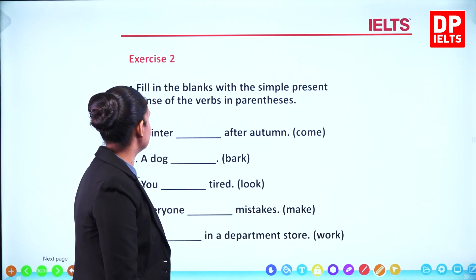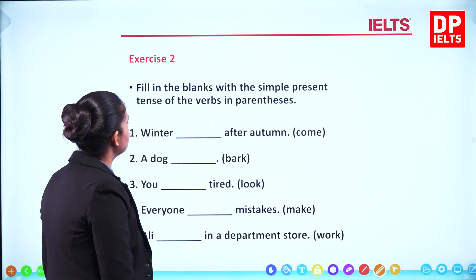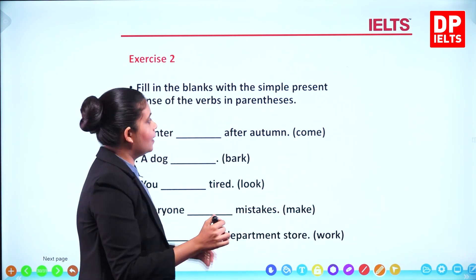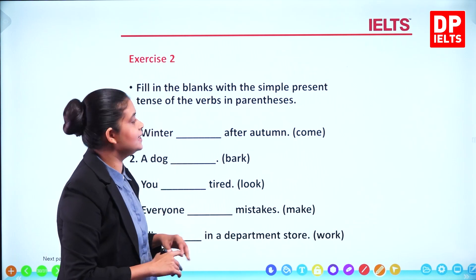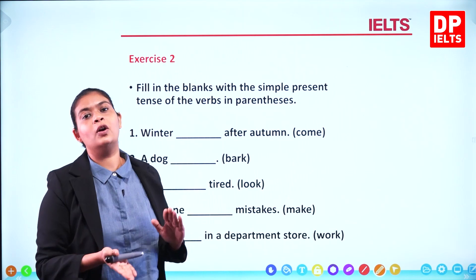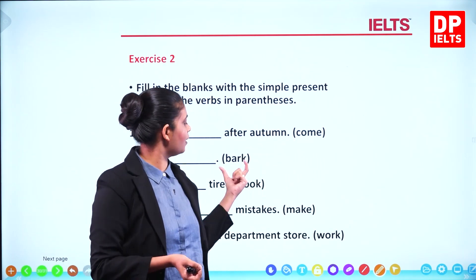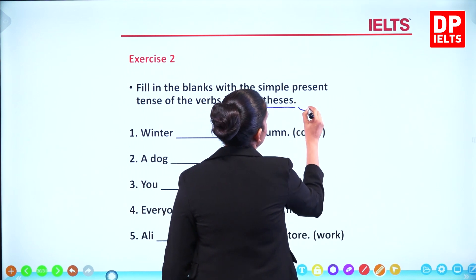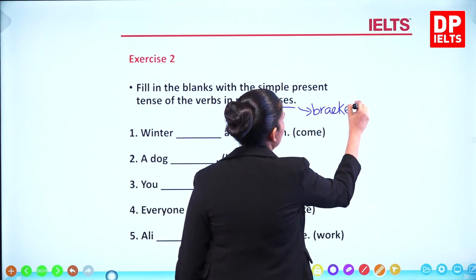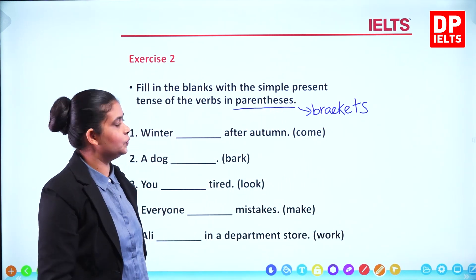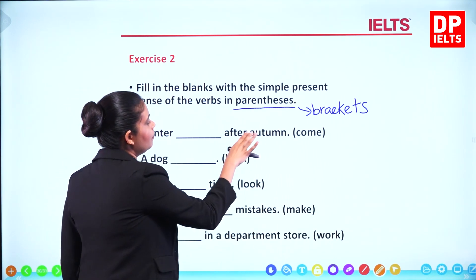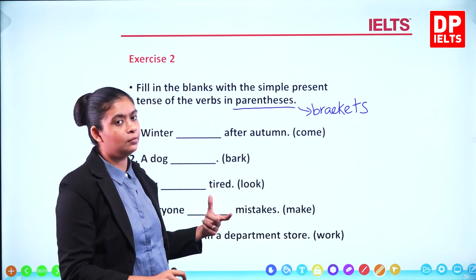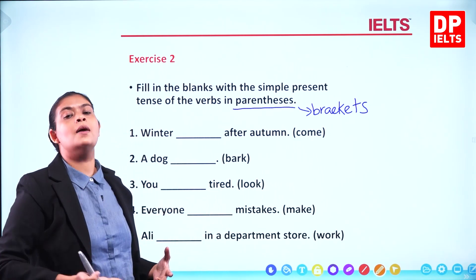Let's have a look at the next exercise. Fill in the blanks with the simple present tense of the verbs in the parenthesis. Parenthesis means brackets — apita saampoorna karana lumei sentences present tense khaadaala, ekko es form meka dhaannu ne, ekko base form meka dhaannu ne. Winter comes after autumn — do we say come or comes? Winter comes after autumn.